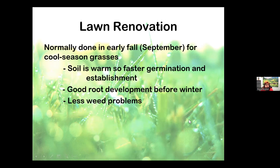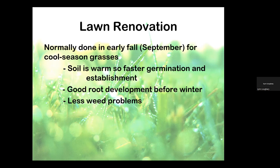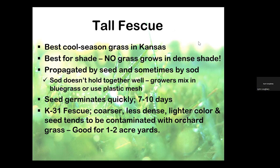Lawn renovation for cool season grasses — that's fescue and bluegrass — is done in early fall, usually September. The reason we do it now is because our soils are warm, so turf grass seeds germinate really quickly and establish quickly. We'll eventually have cooler nights, which encourages good root development and you get good establishment before winter. Typically we also have fewer weed problems, but you have to take care of the weeds before you do any renovating.